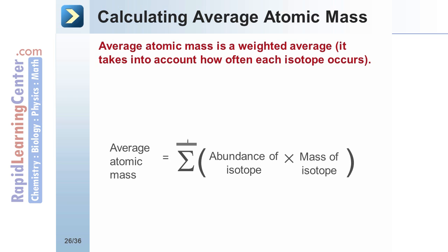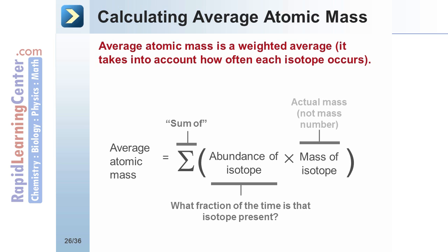The average atomic mass is equal to the sum. The capital Greek letter sigma indicates sum. Of the abundance, which is the fraction of the time that isotope is present, times the mass of that isotope.